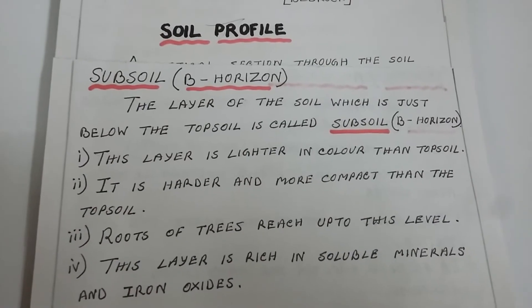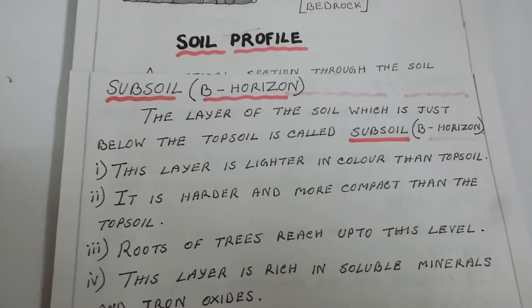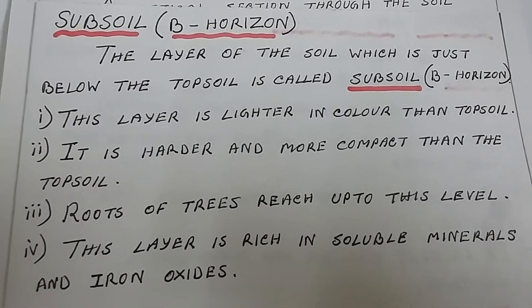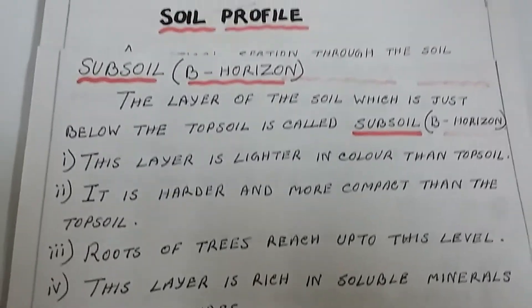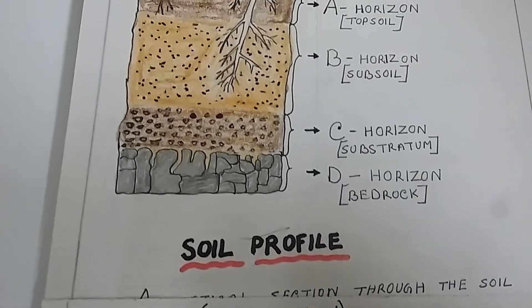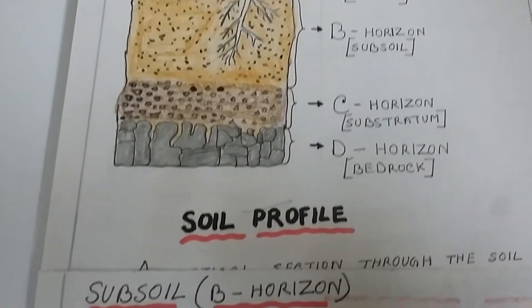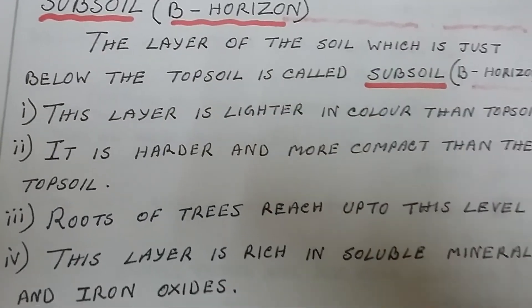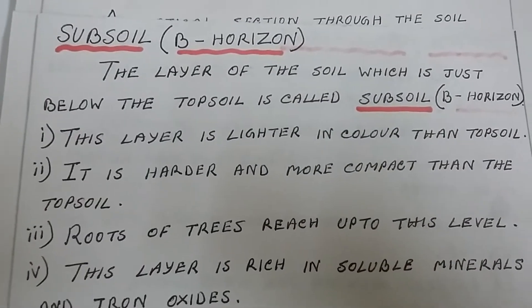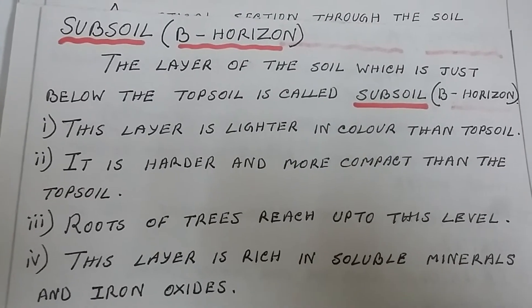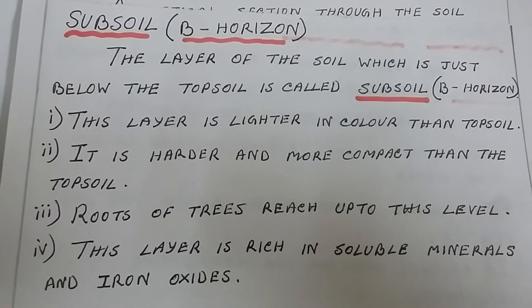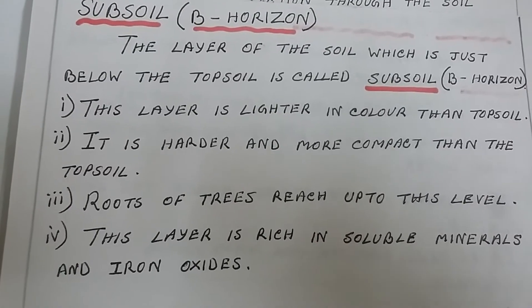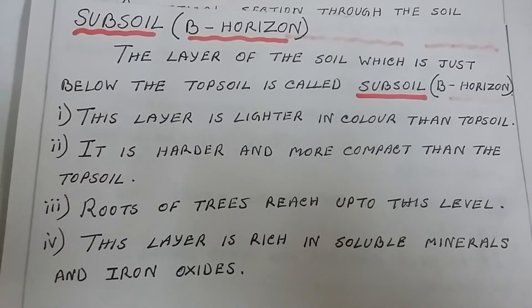The second layer of the soil, just below the topsoil, is called subsoil or B horizon. This layer is lighter in color than topsoil as it has very little humus or organic matter. This layer is harder and more compact than the topsoil. Roots of trees generally reach up to this level. This layer is rich in soluble minerals and iron oxides.